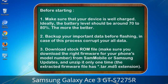Before starting: 1. Make sure that your device is well charged — ideally the battery level should be around 70 to 80%, the more the better. 2. Back up your important data before flashing, in case this process corrupts all your data. 3. Download the stock ROM file and make sure you download the right firmware for your phone's model number.